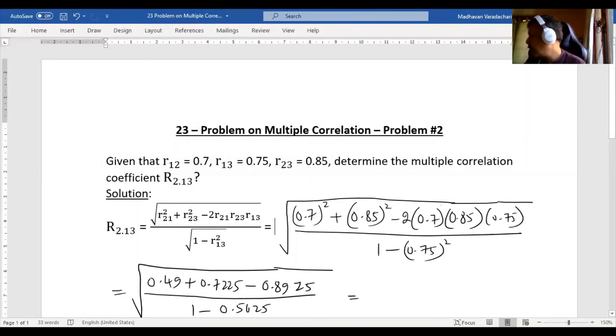...this, we will have it as square root of 0.7314. And if we evaluate that square root, we will have the answer as 0.855. So if you find the contents of these videos to be useful to you...